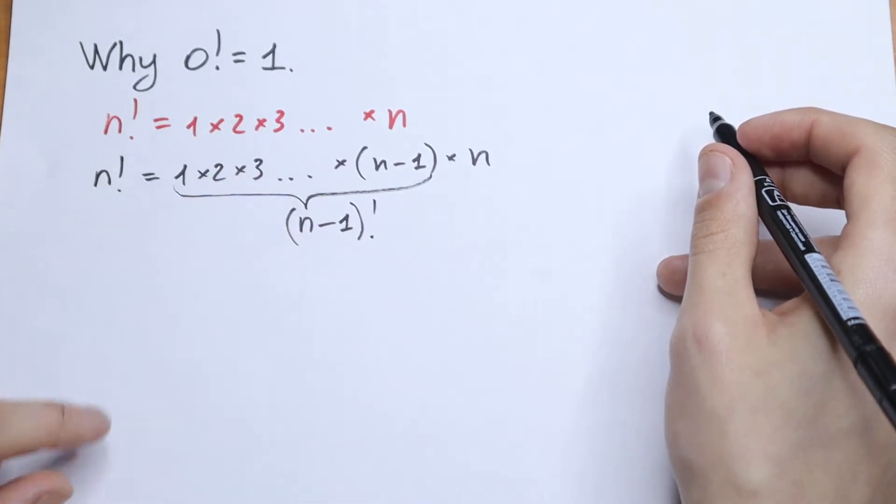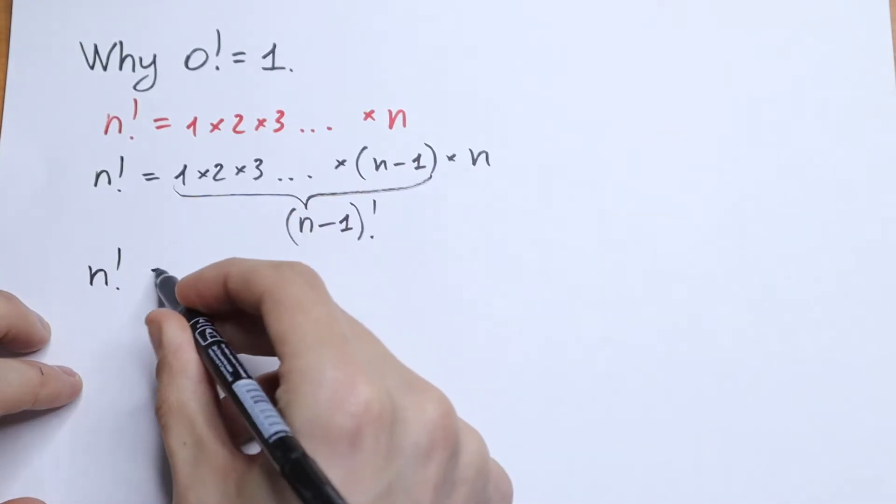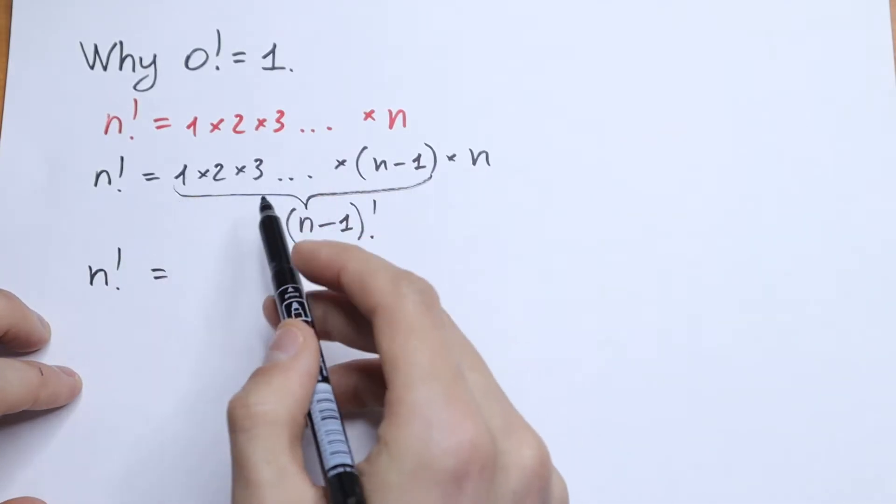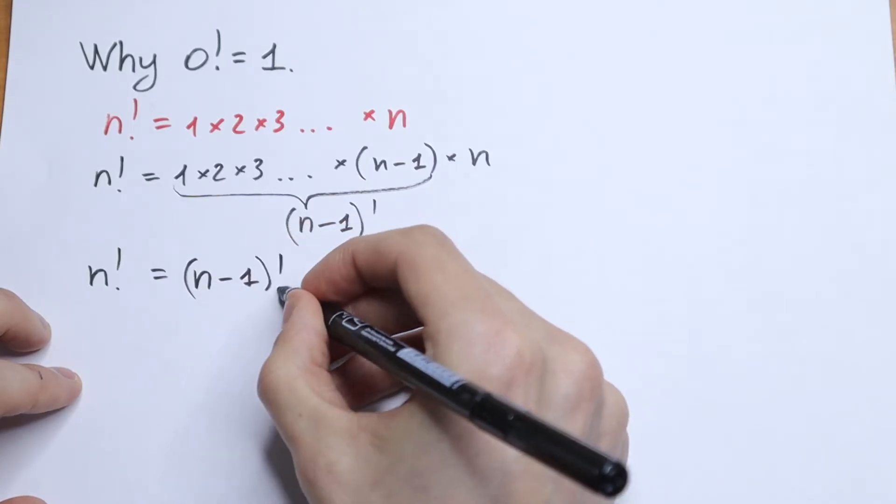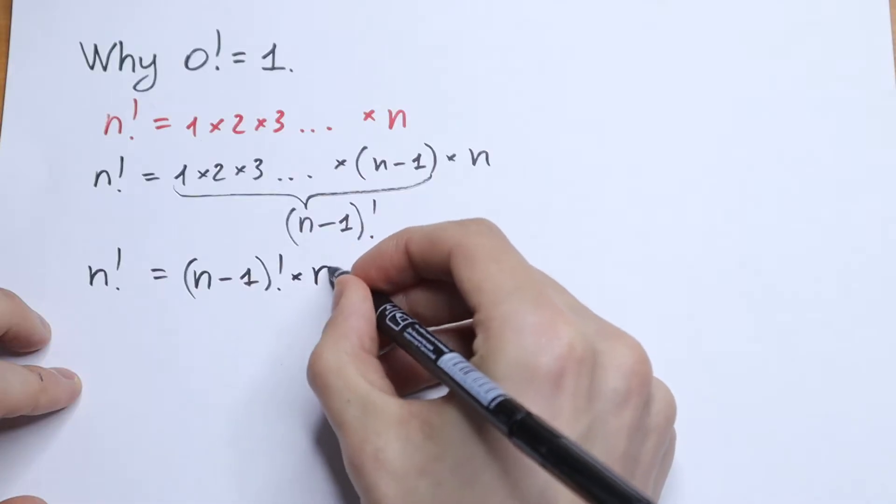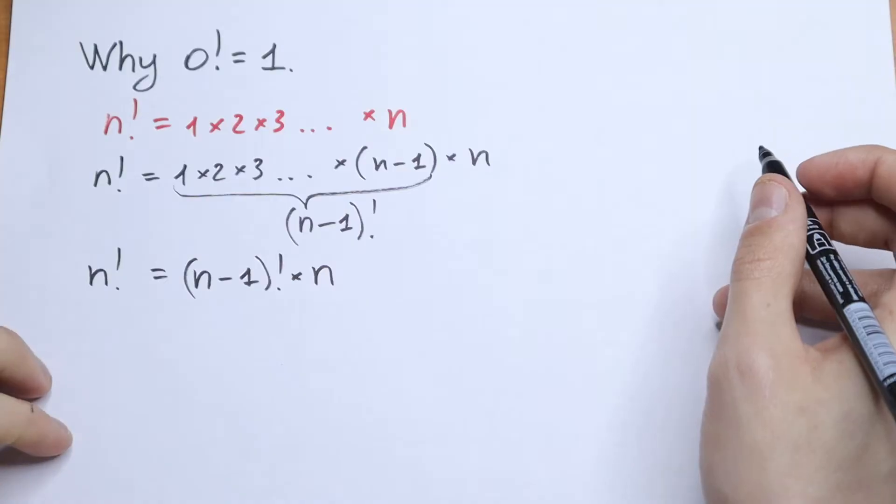Why I write this? Because we can write that our n factorial is equal to this product n-1 factorial multiplying by the last one, by the n. So this is our formula that we need right now.